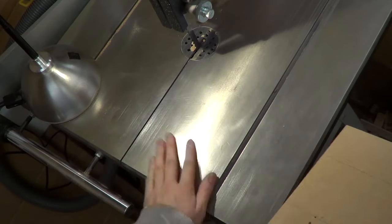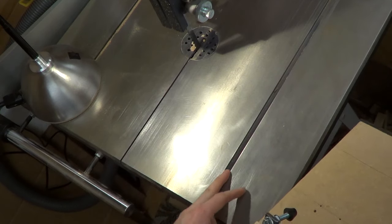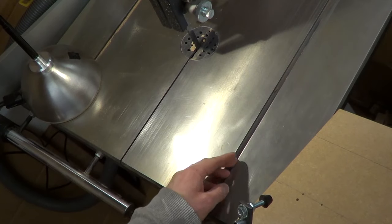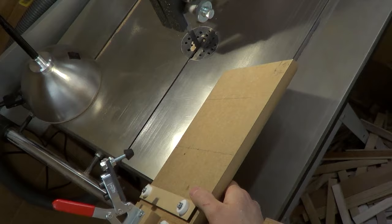The cast iron table of the machine itself has a couple of T-slots in it for accessories to slide in. The width of these slots is rather unusual, it's 9.3 millimeters so nothing sort of standard will fit it.